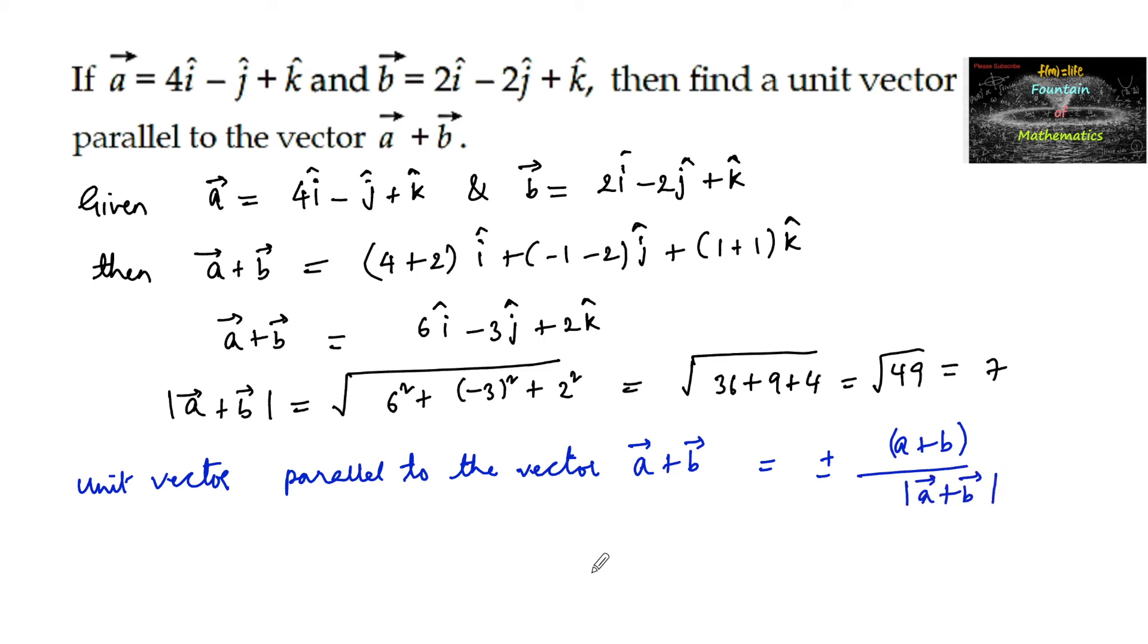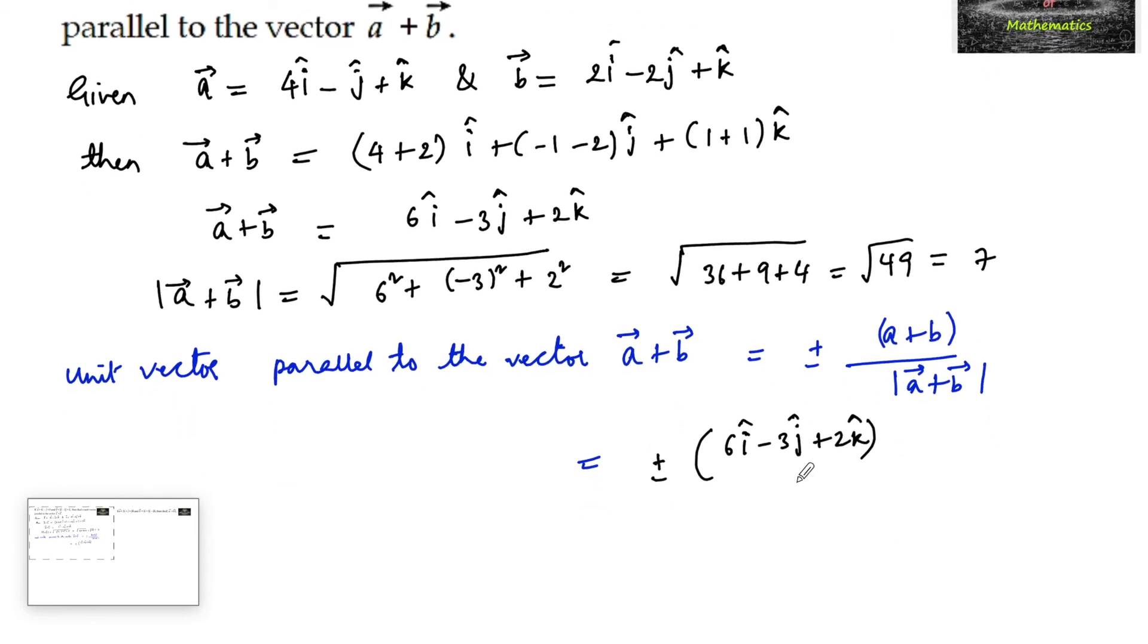Therefore we can give the answer here: plus or minus a plus b vector, that is 6i minus 3j plus 2k upon mod of a plus b which is 7. So we can write plus or minus 1 by 7 times 6i minus 3j plus 2k is the answer.